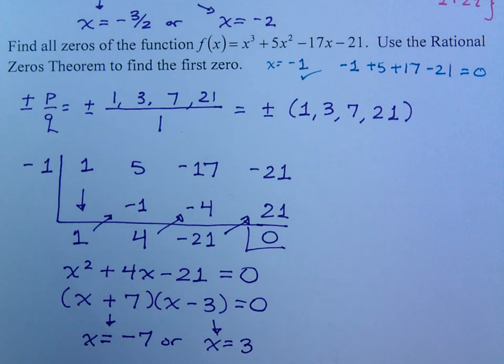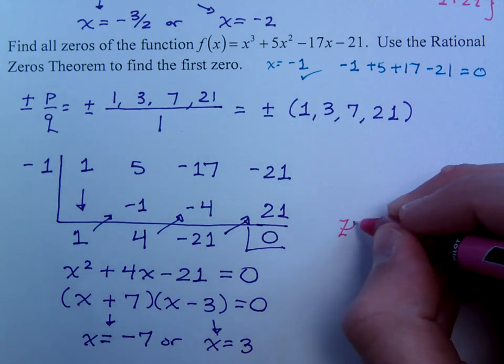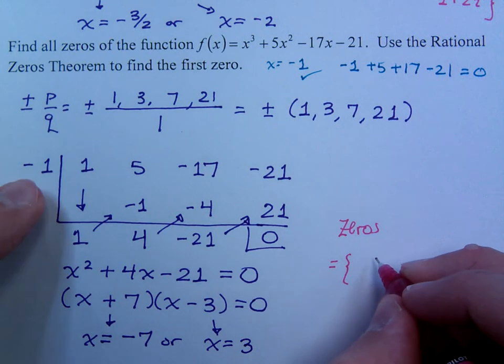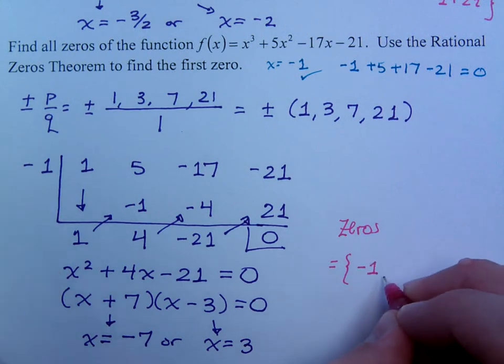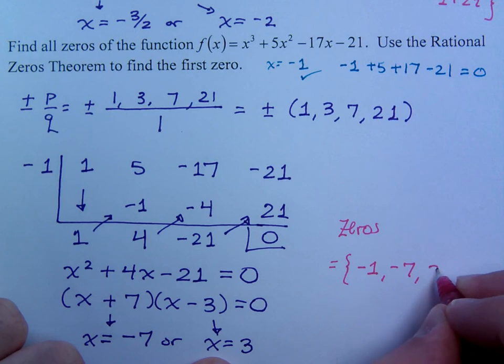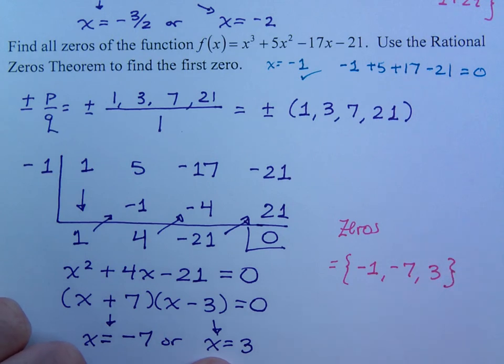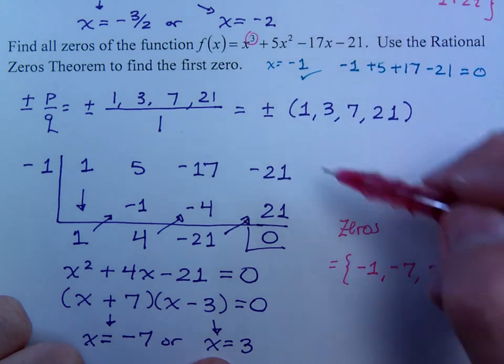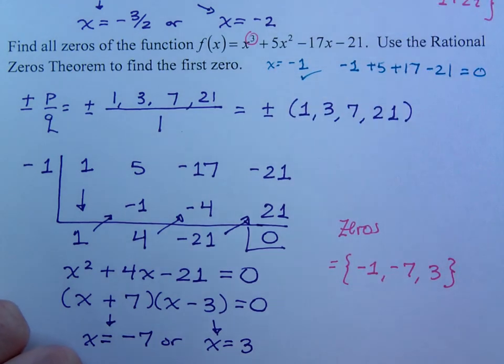So, your 0's will be the negative 1 we started with, negative 7, and positive 3. I had degree 3, I expected 3 solutions, and that's exactly what I got. Thank you.